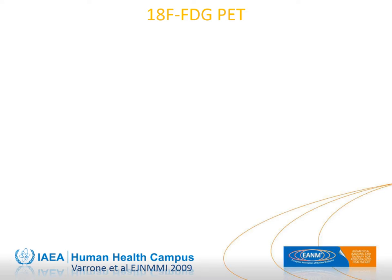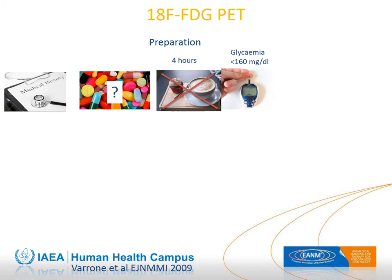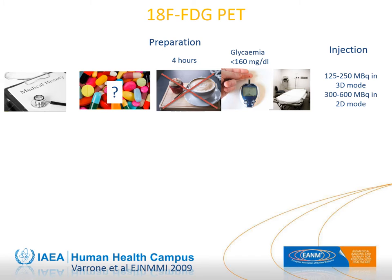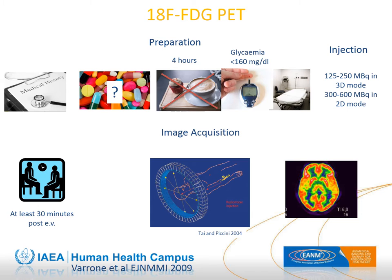For FDG-PET procedures, information about medical history and administered drugs must be collected. Patients should fast for at least 4 hours to allow optimal cerebral FDG uptake, and blood glucose level should be checked prior to administration. Note that in brain tumors, hyperglycemia does not need to be corrected and can enhance detectability. Patients should be positioned comfortably in a quiet, dimly lit room with an IV cannula for at least 20 minutes during the uptake phase. Recommended activity is approximately 150 MBq for 3D mode, and images must be acquired at least 30 minutes after injection.